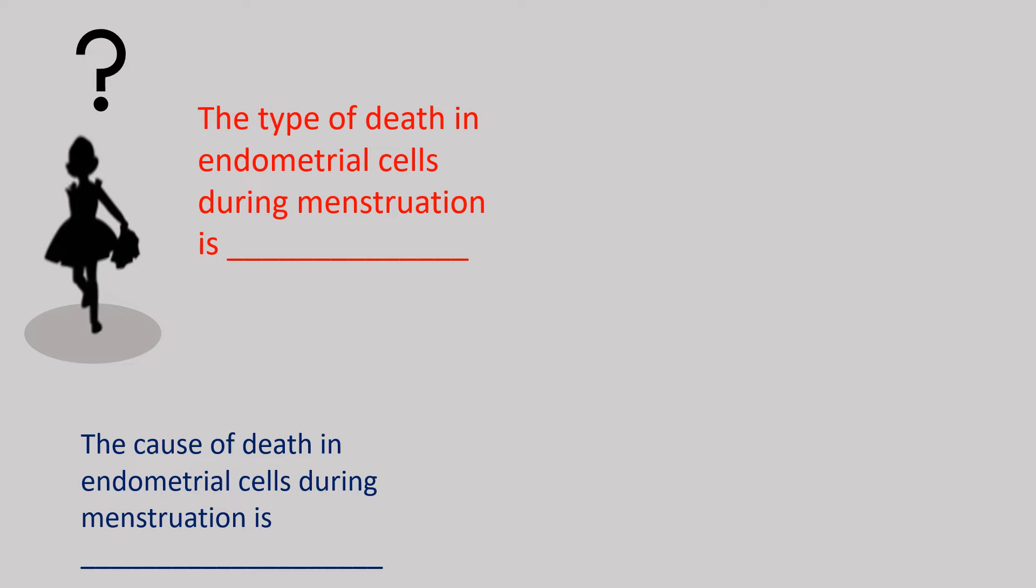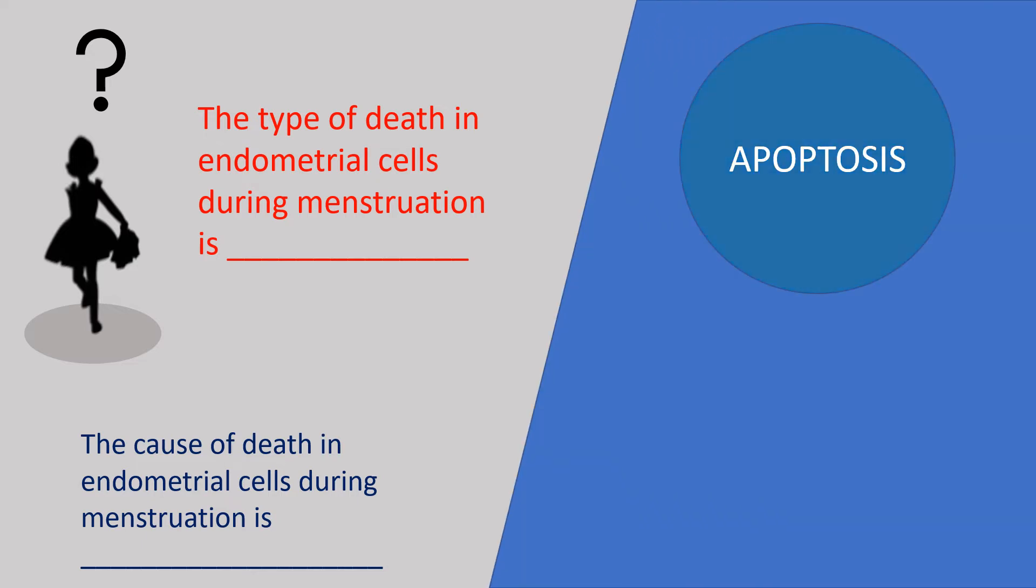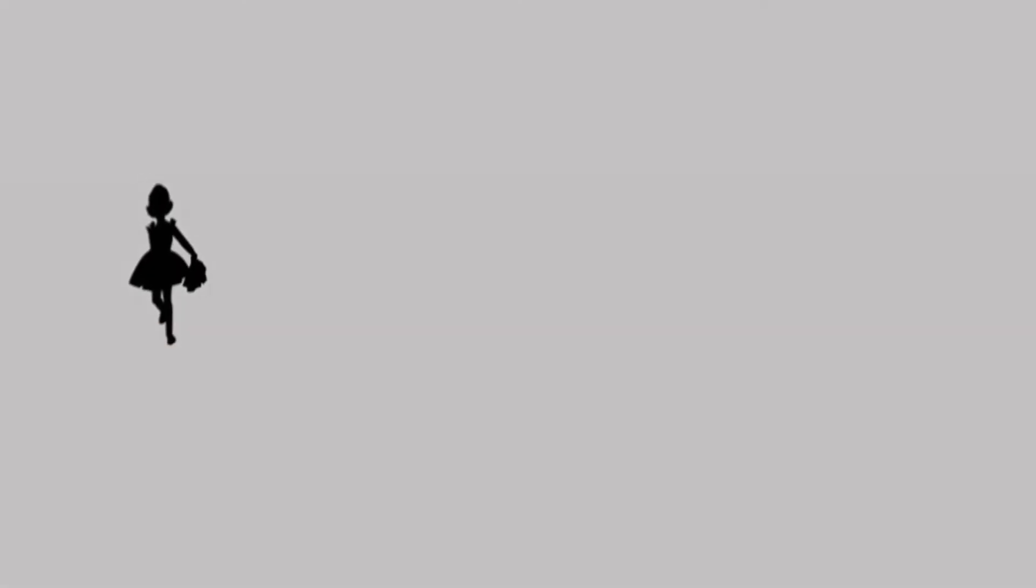The answer is apoptosis. The cause is hormonal withdrawal from the hormone-dependent cells of the endometrium. The endometrial cell breakdown during menstruation is due to apoptosis.